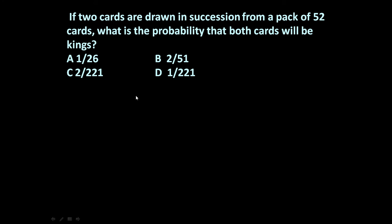Let us see the first problem. If two cards are drawn in succession from a pack of 52 cards, what is the probability that both cards will be kings? We want the first card to be a king and the second card to also be a king, so the AND rule is used.